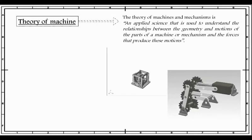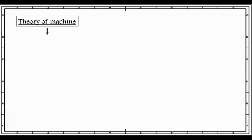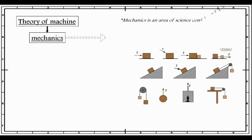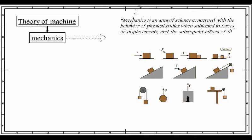Next comes mechanics. Mechanics, which is an integral part of theory of machine, is an area of science concerned with the behavior of physical bodies when subjected to forces or displacement and the subsequent effect of the bodies on the environment. Some of the examples are shown below.